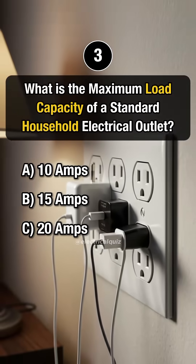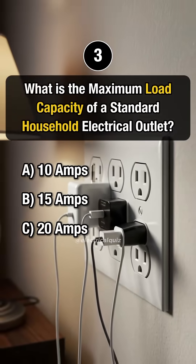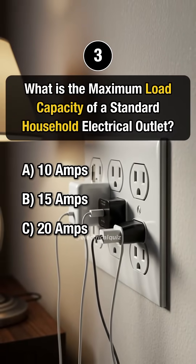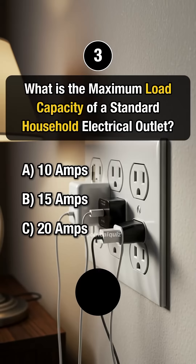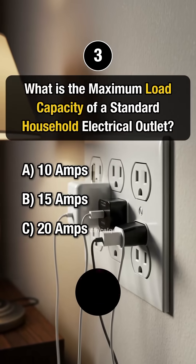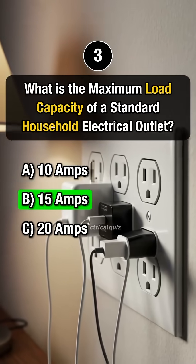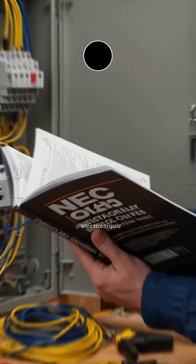Question 3. What is the maximum load capacity of a standard household electrical outlet? Answer: B. 15 amps.